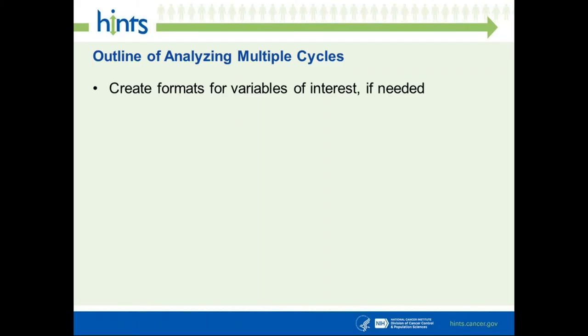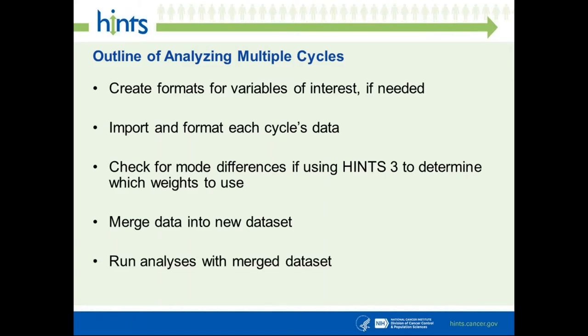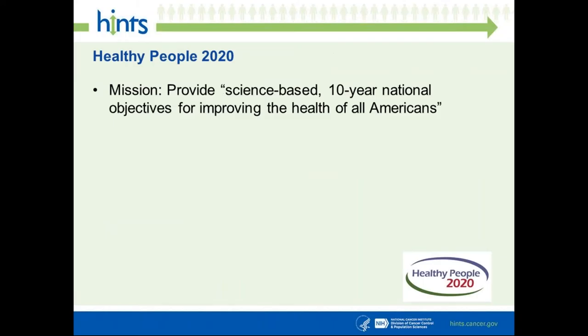There are five steps to merging and doing analysis across cycles. First, create formats for your variables of interest — if your outcome variable is coded as 1 and 2 in HINTS, you may want to recode it to 0 and 1 to avoid error messages. Second, import and format each cycle's data individually. Third, check for mode differences, especially if using HINTS Administration 3. Fourth, merge the data set. Fifth, run the analyses.